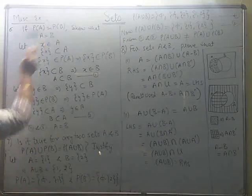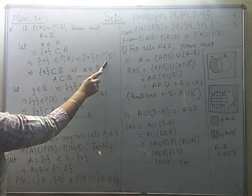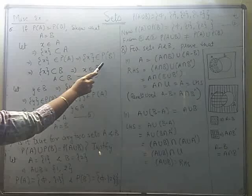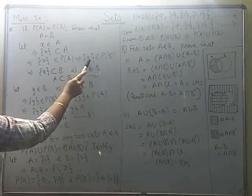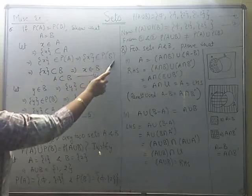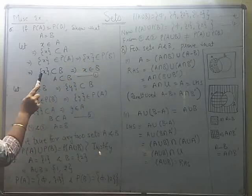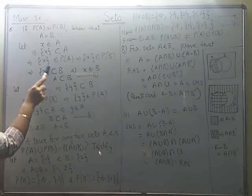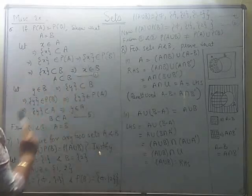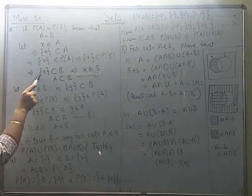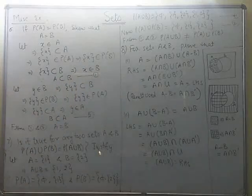It is given that power set of A is equal to power set of B, so we can replace power set of A with power set of B. That means the set containing x belongs to, or is an element of, power set of B. If it is an element of power set of B, that means {x} is a subset of set B. And if {x} is a subset of B, that means this element x must be an element of B.